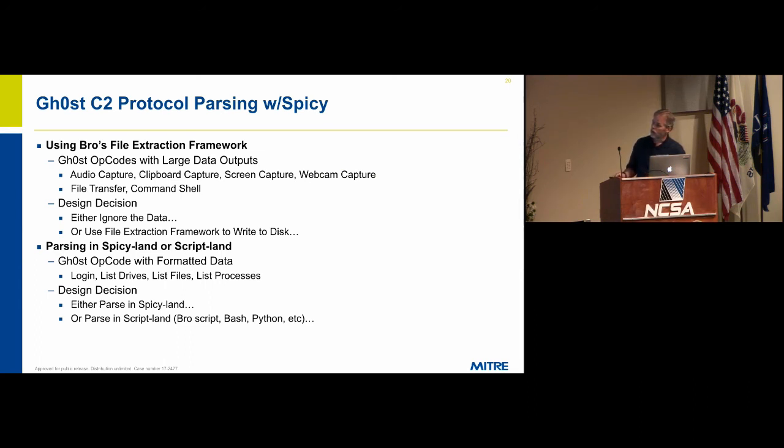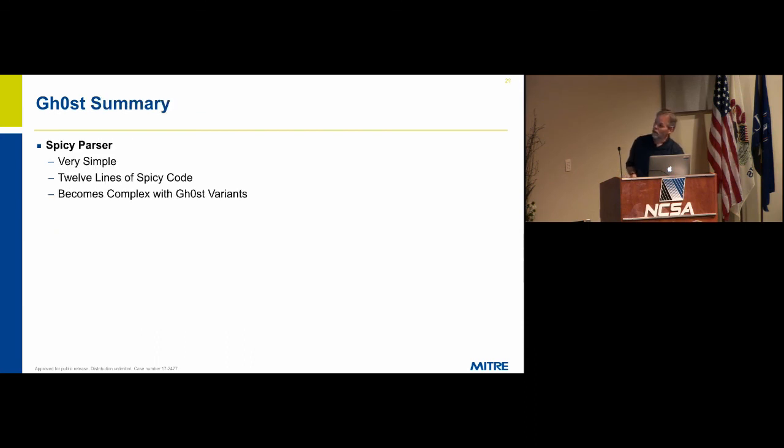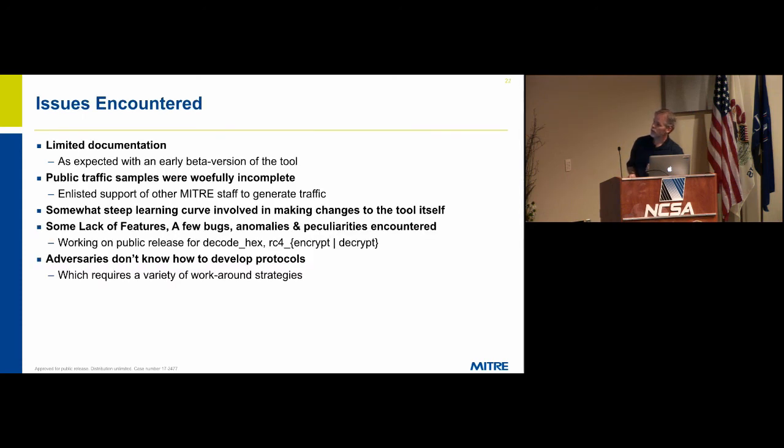We're working on taking some of the more advanced capabilities, which are done in separate channels, and passing those to the file extraction framework. We have one example of that in our Turkojan parser. I think as we get a little further along and more advanced at this, it'll be interesting to do some performance metrics. Let's develop one that does all of this in spicy and one in script land and see what the difference is for large volumes. Spicy parser for this is very simple, twelve lines in spicy code, and it becomes very complex with variants.